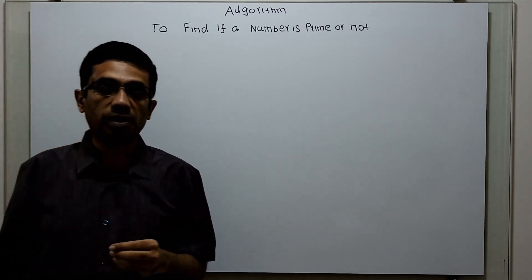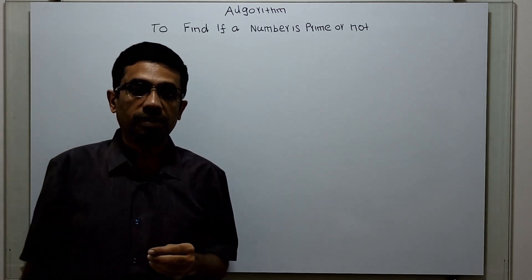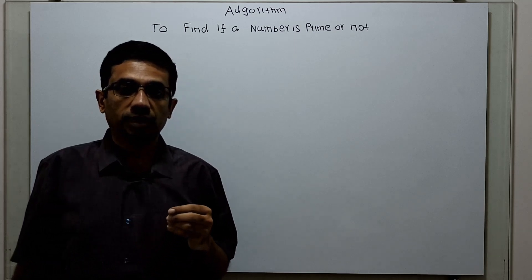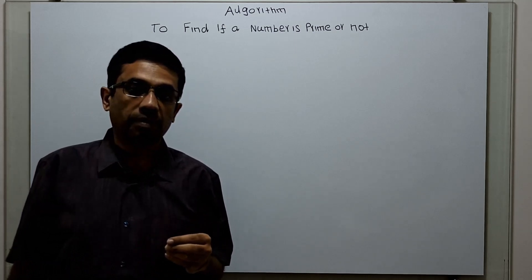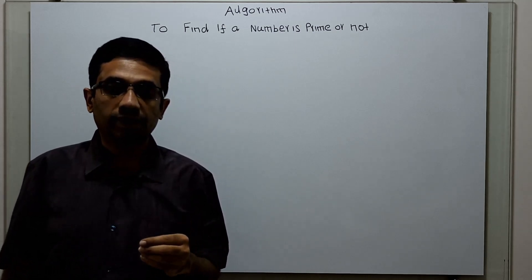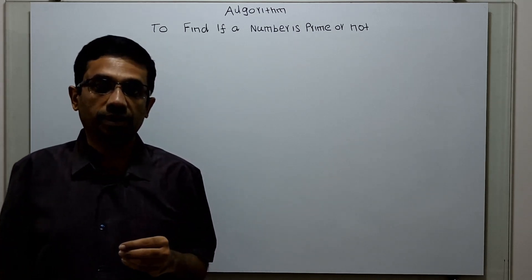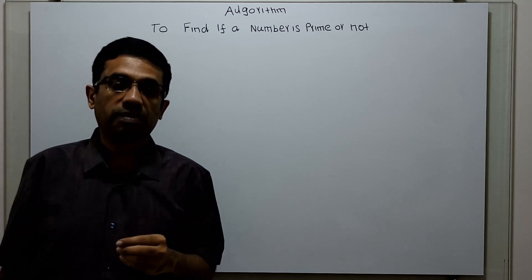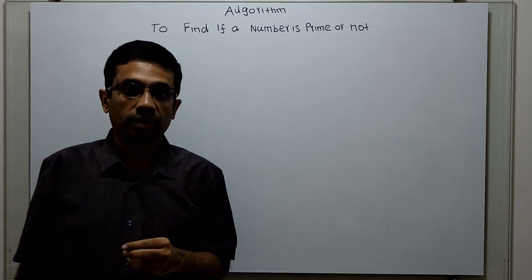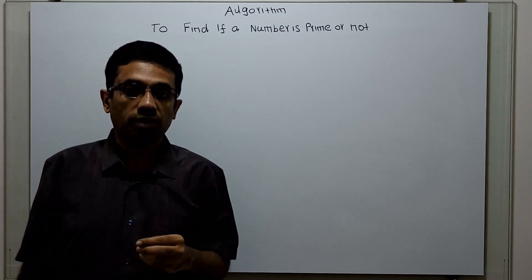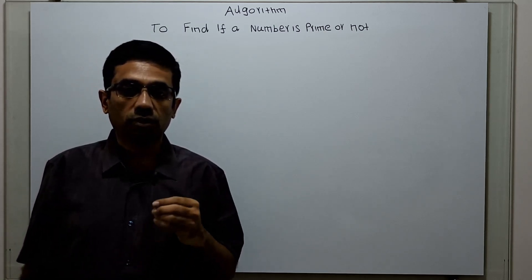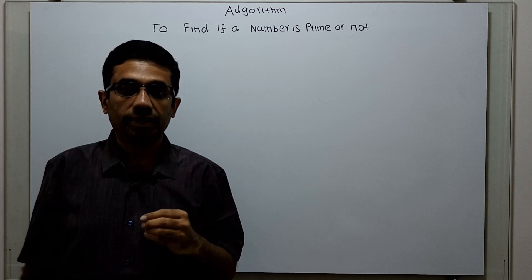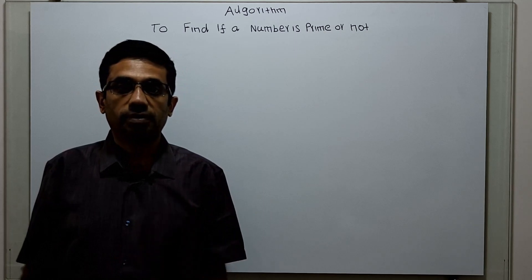If you see a few prime numbers: 1 is a prime number, 3 is a prime number, 5 is a prime number, 7 is a prime number, 11 is a prime number and so on. We are going to write an algorithm to find the prime numbers.